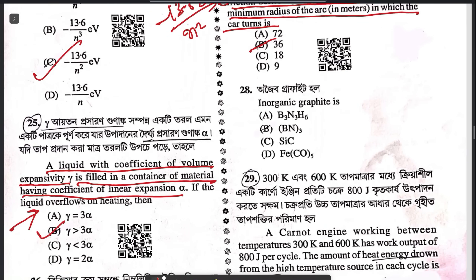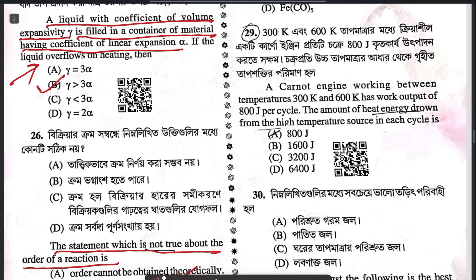Question 28: which one is isostructural with sulfide? Boron nitride is basically the answer.